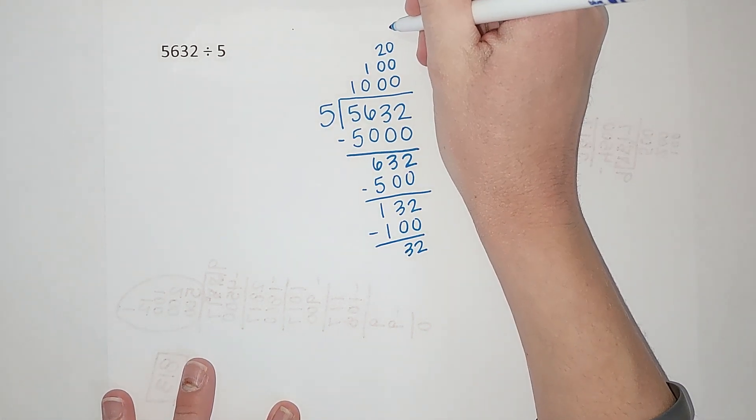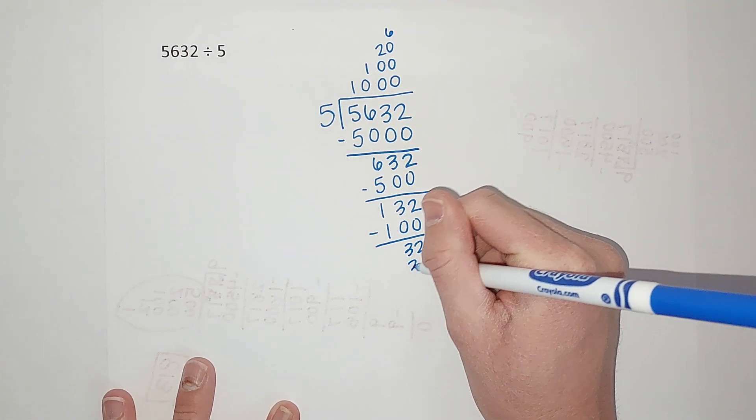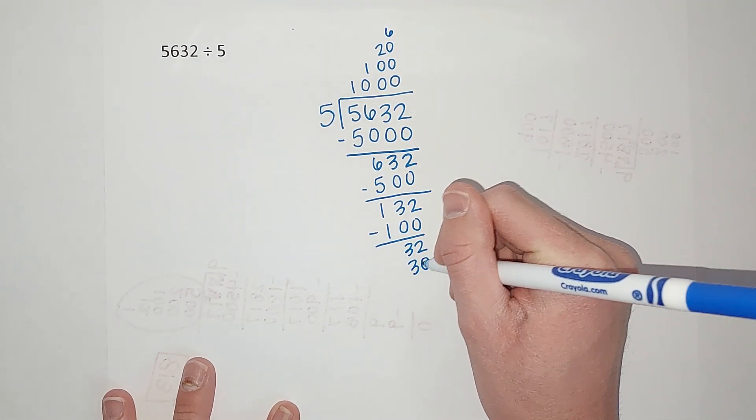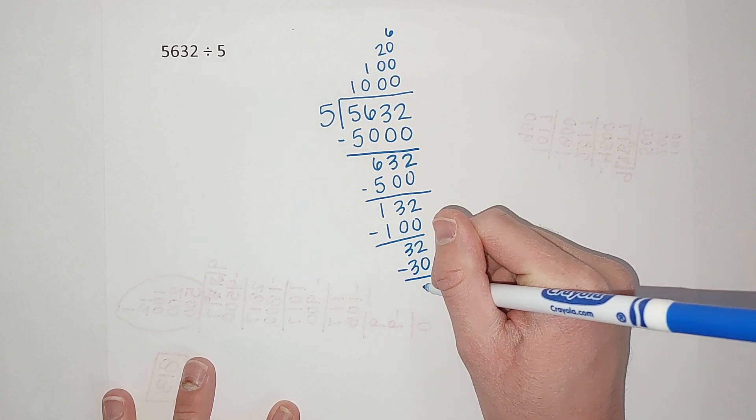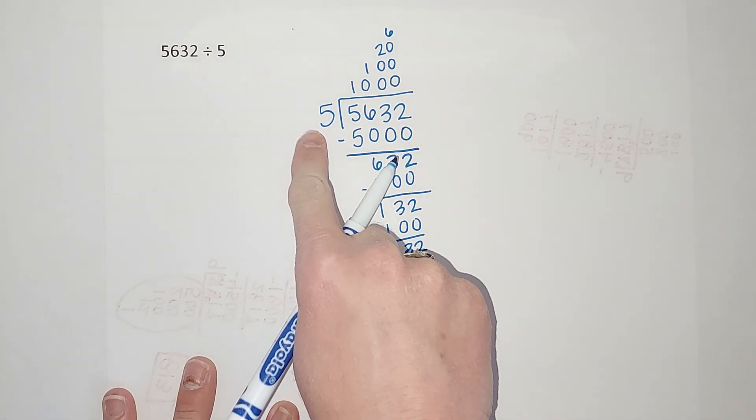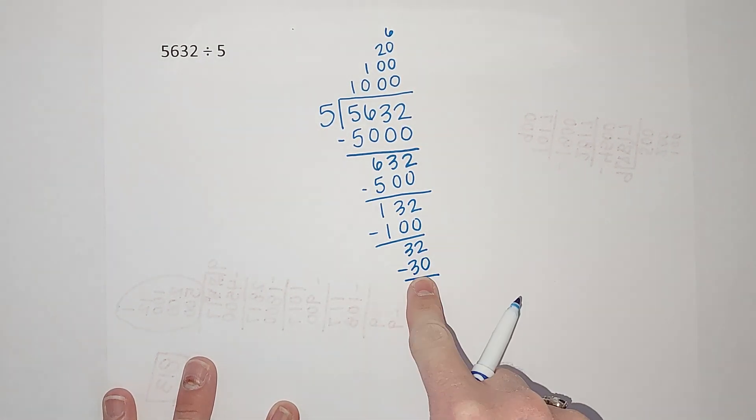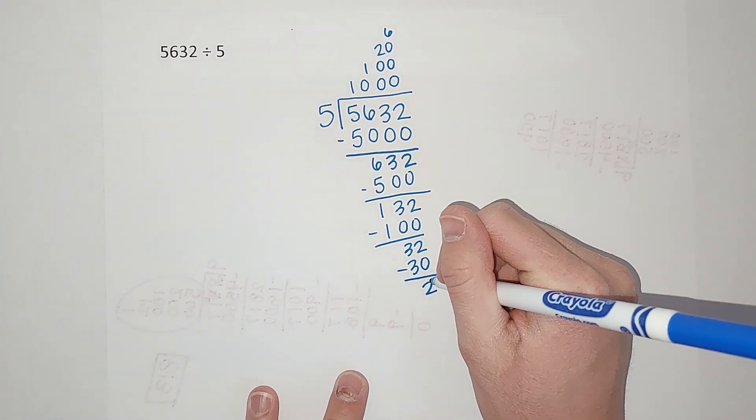And then I know 5 goes into 32 six times. Six times 5 gives me, sorry, not 32, 30. When I subtract I'm left with 2. And then we can't divide 5 into 2 without fractions and decimals, right? So this is going to be my remainder.